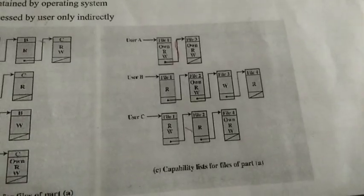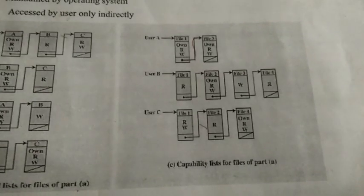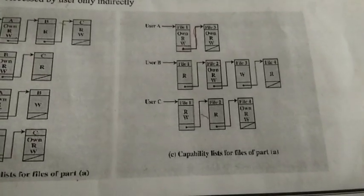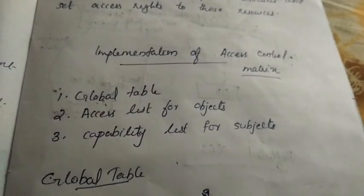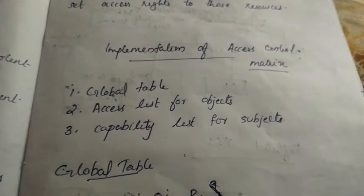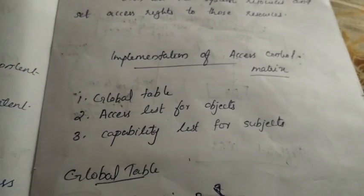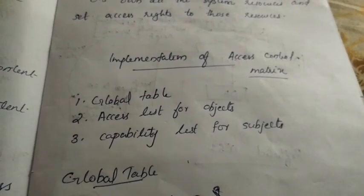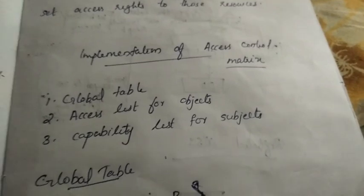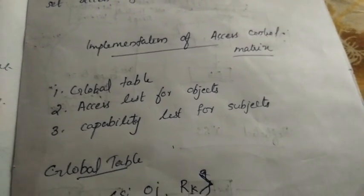So these are the three methods to implement access control mechanism: Global Table, Access List for Objects, and Capability List for Subject. The capability list focuses on the user as the main item.